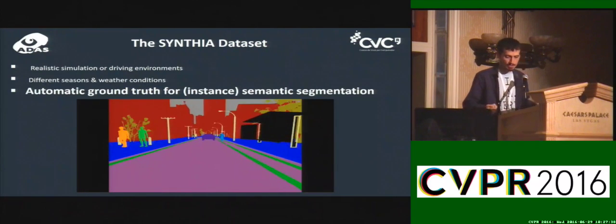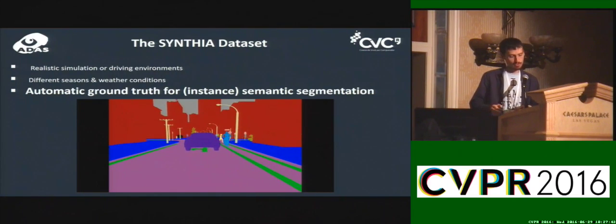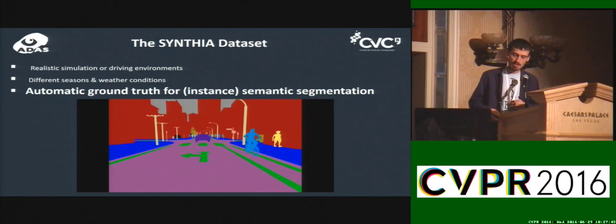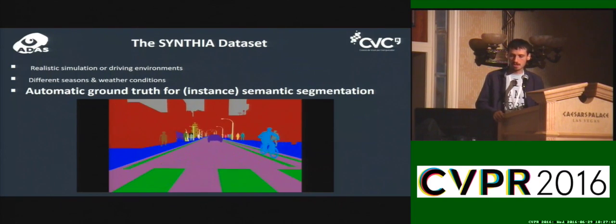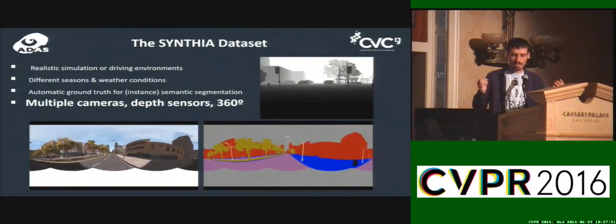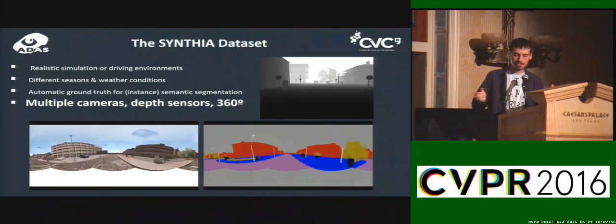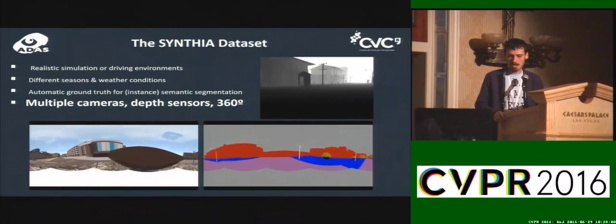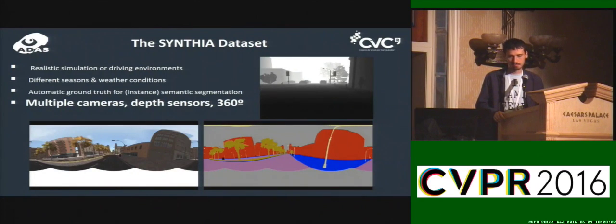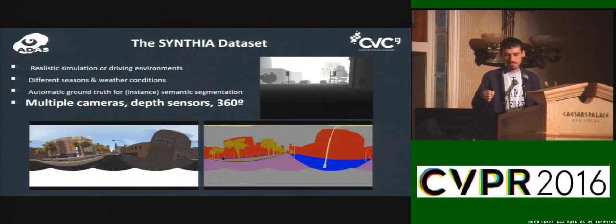Most importantly, we have automatic ground-truth for all the images at the level of instances, so we have IDs for each of the objects. In addition to this, our acquisition system has multiple cameras giving you 360 degrees of view, including depth information and semantic segmentation. We are also including other things like LiDAR. So what we have done is generated a lot of data — more than 200,000 images — using Cynthia.